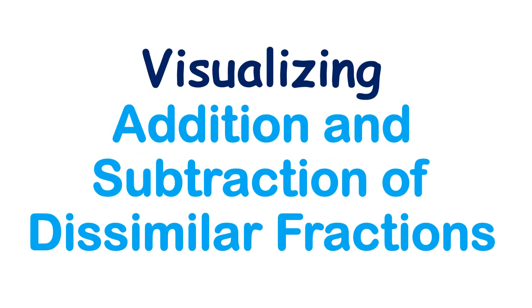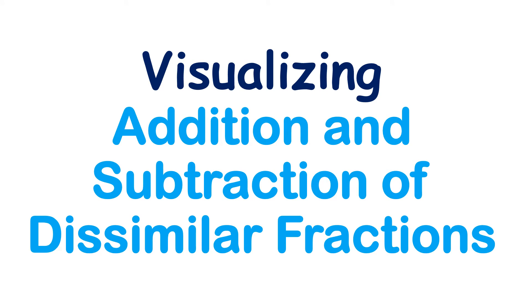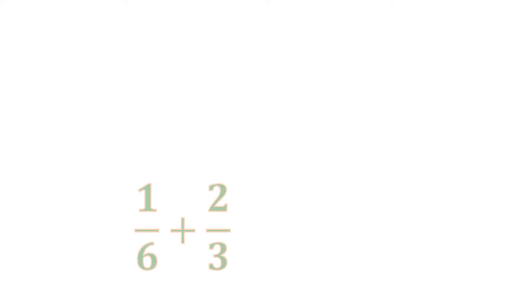In this video, I'm going to visualize addition and subtraction of dissimilar fractions. So let's have an example. We have 1 sixth plus 2 thirds. This is an example of dissimilar fractions because they don't have the same denominators.